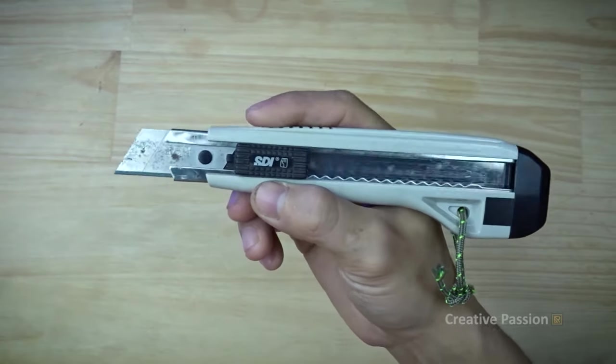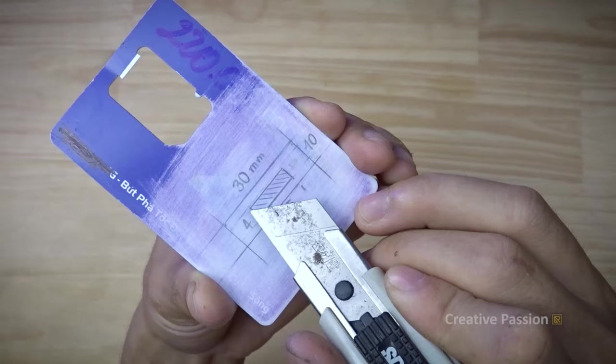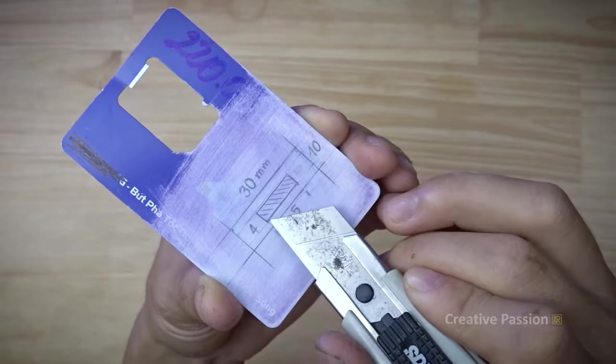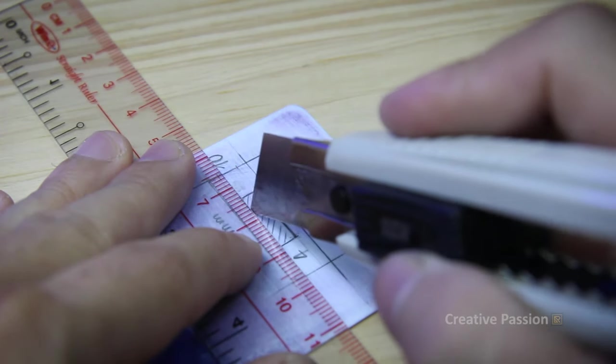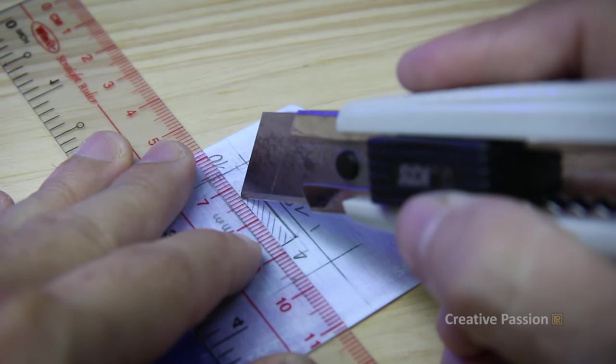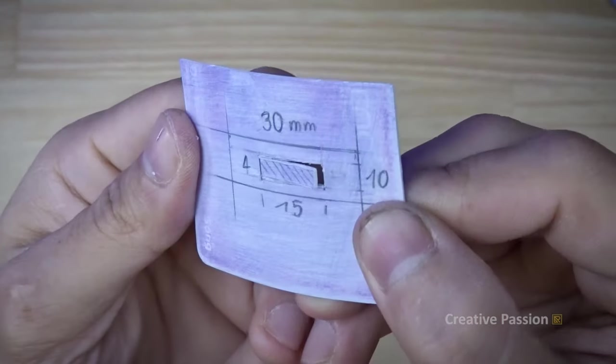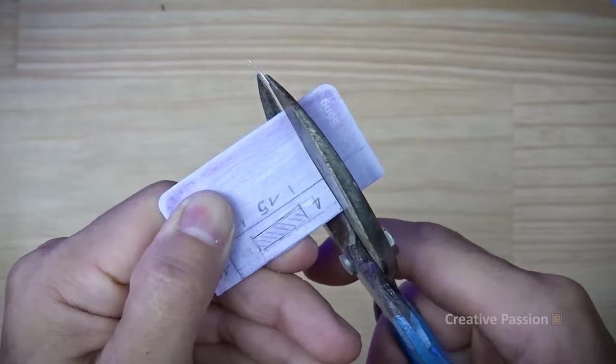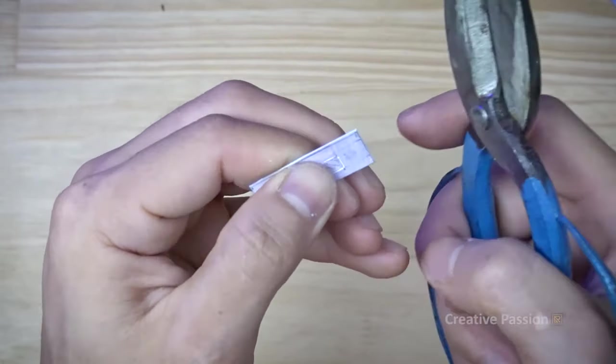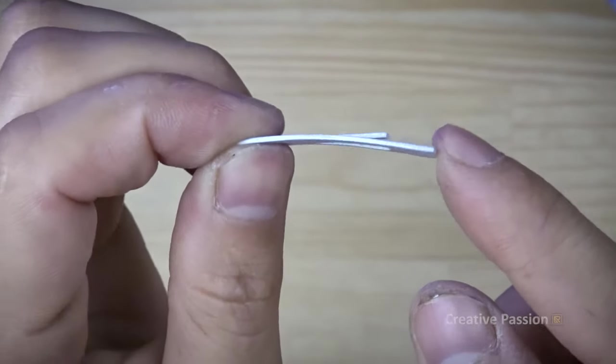I will use this paper cutter knife to cut the reed. You will cut along these edges. The reed should be able to move back and forth like this.